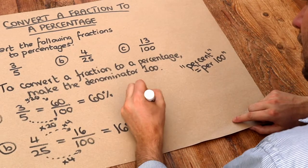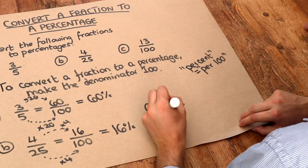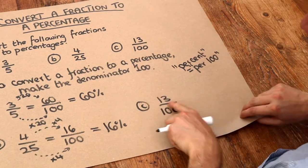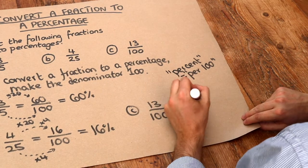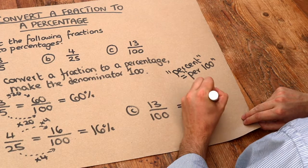And then finally, c. 13 over 100. This is a nice, easy one to finish with. Now that's already over 100, and so therefore, it must be 13%. Thank you.